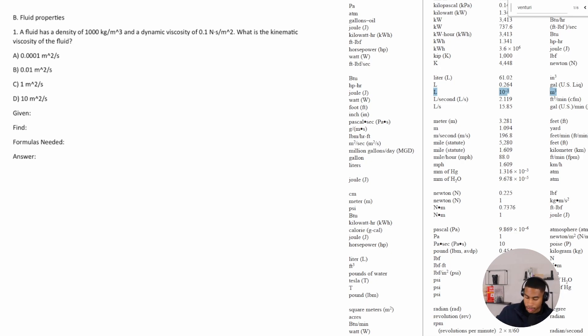And so let's go ahead and dive right in. So number one says a fluid has a density of 1,000 kilograms per meter cubed and a dynamic viscosity of 0.1 newton seconds over meters squared. What is the kinematic viscosity of the fluid?